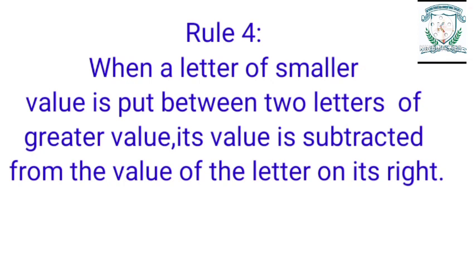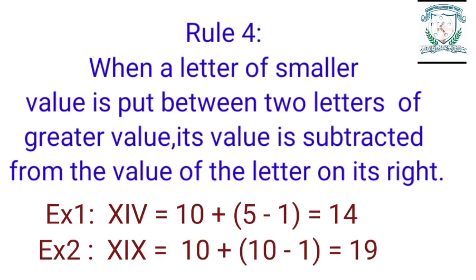Rule 4: When a letter of smaller value is put between two letters of greater value, its value is subtracted from the value of the letter on its right. Example 1: XIV = 10 + (5 − 1) = 14. Example 2: XIX = 10 + (10 − 1) = 19.